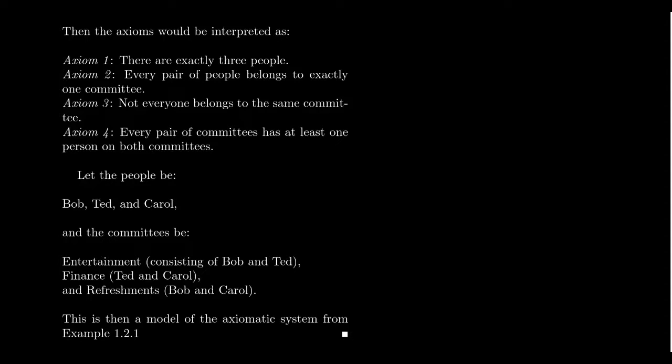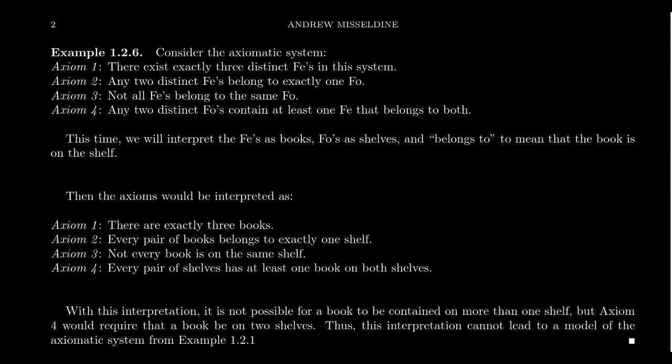Although these results might seem trivial for this toy example, for more complicated axiomatic systems this strength is a valuable tool in model theory. For example, any interpretation with four committees would violate a theorem, meaning at least one axiom must have been violated. The axioms are assumed true for the theory, but in the model it depends on the interpretation. If the interpretation yields valid axioms, we gain all of the theory; if not, at least one axiom is invalid and the theory doesn't apply. That's why we assume the axioms are true — a later interpretation will check whether they hold.